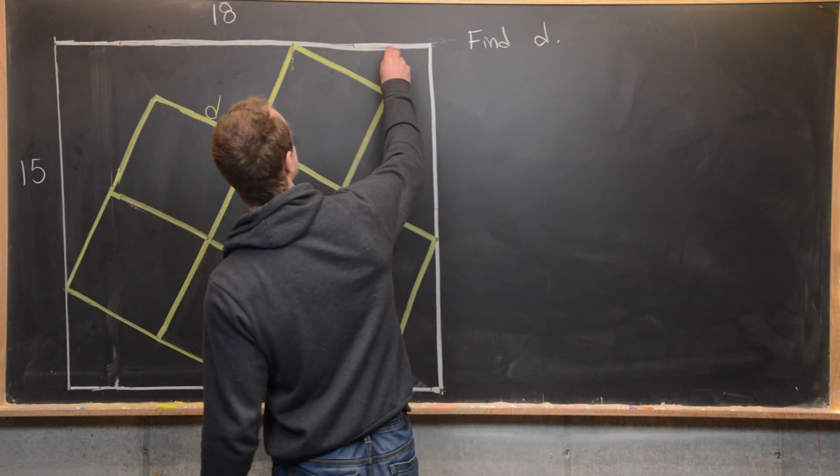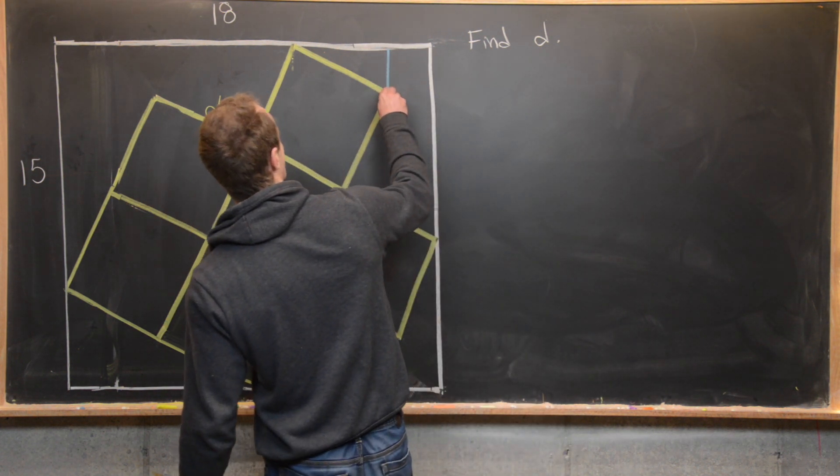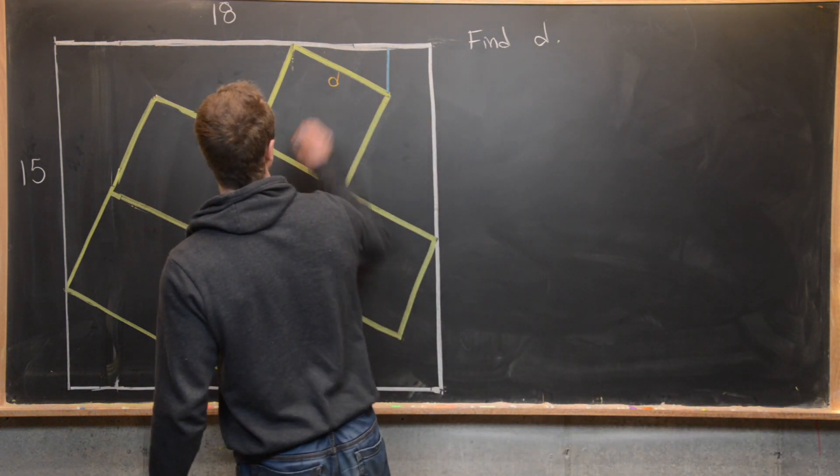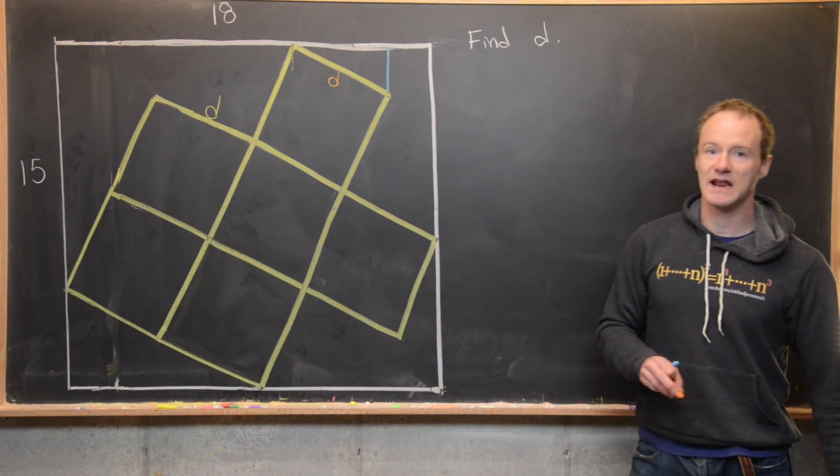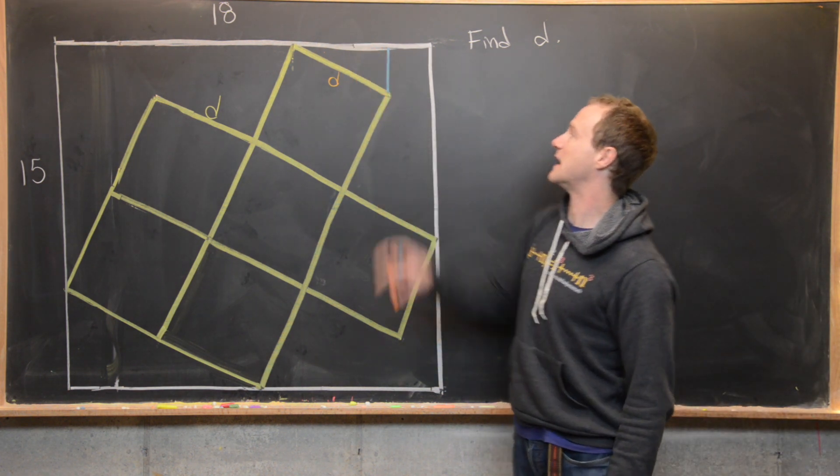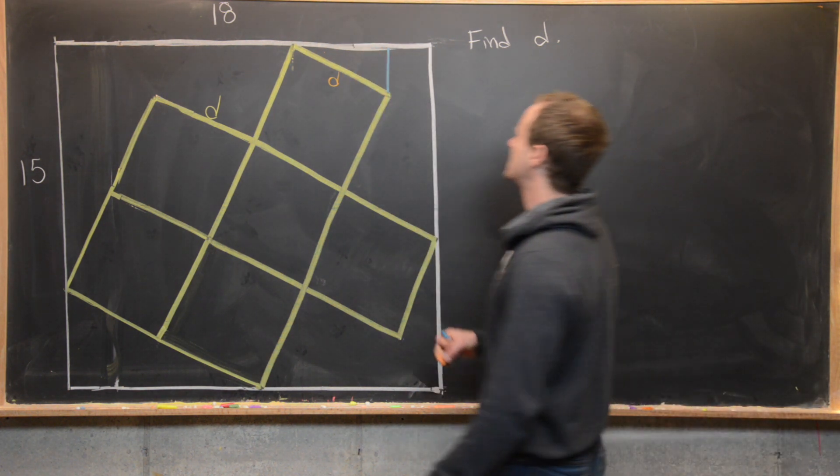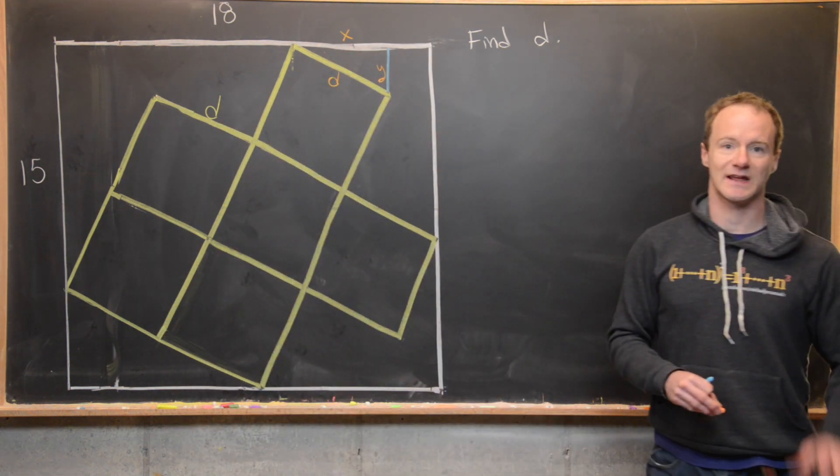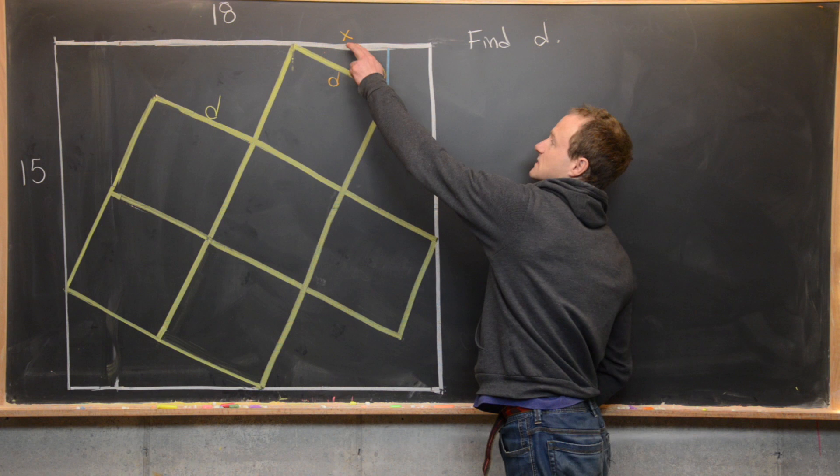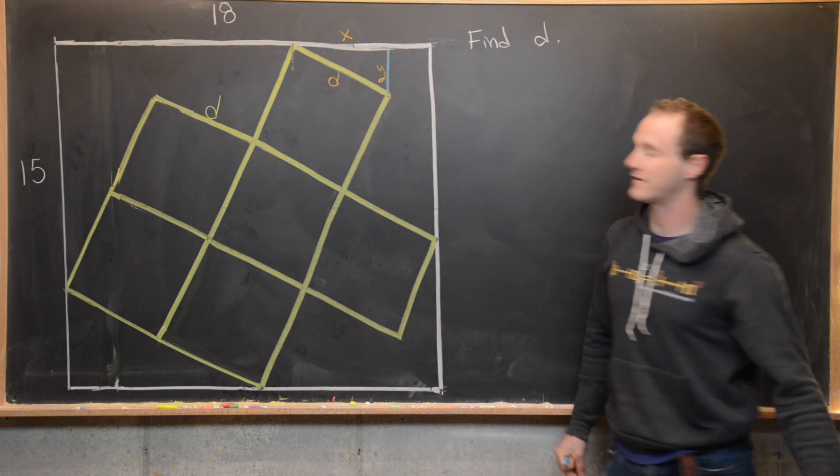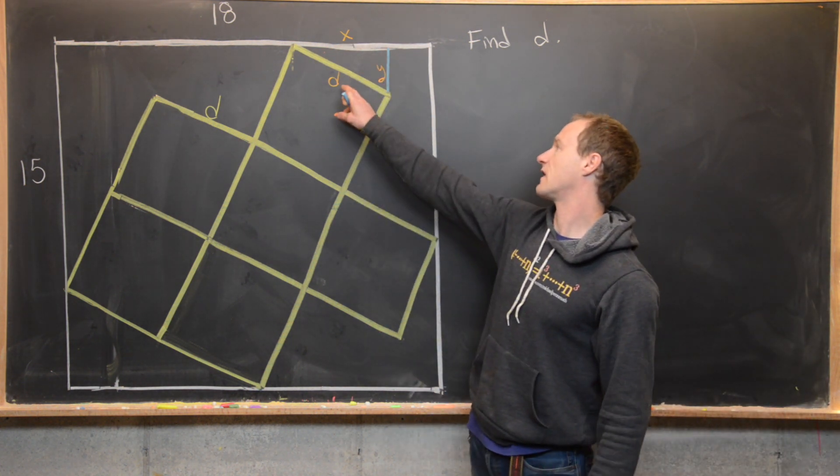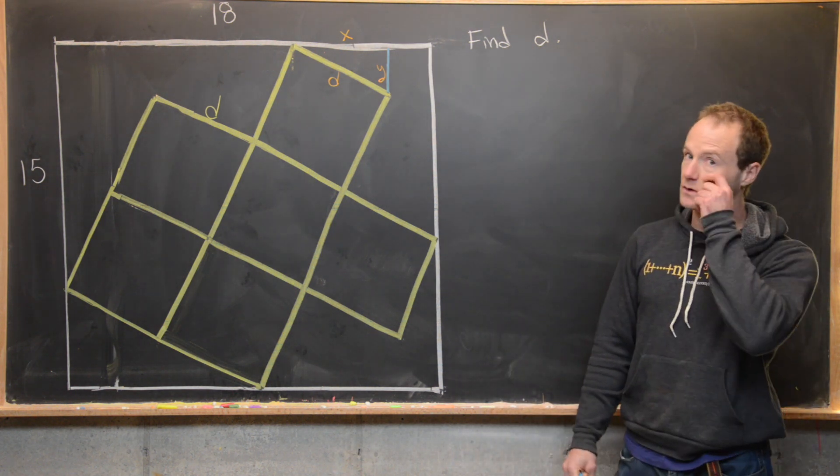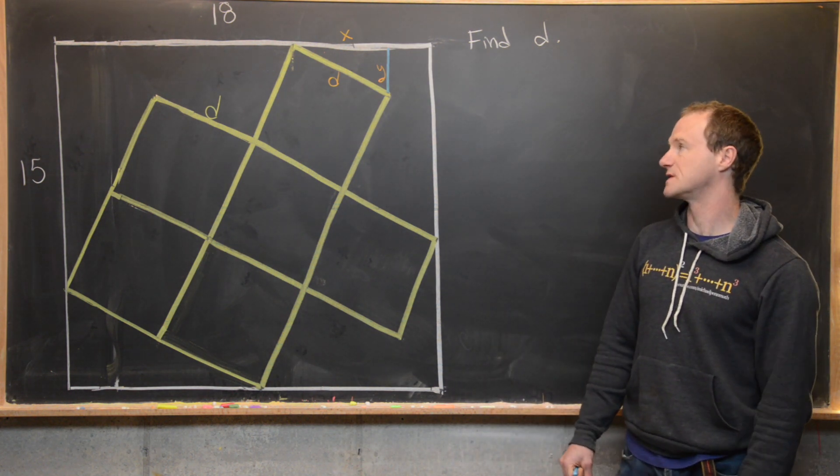Maybe the easiest one to see right now would be a triangle right there. So notice this has hypotenuse D. And then it has some height and some base as well. Maybe let's give this the name Y and this the name X. So we're going to move towards the Pythagorean theorem.